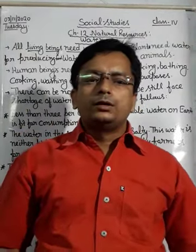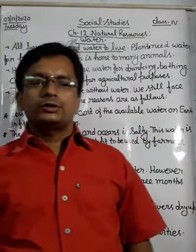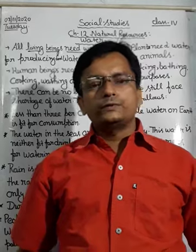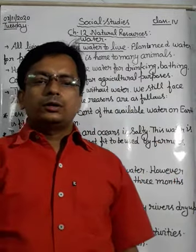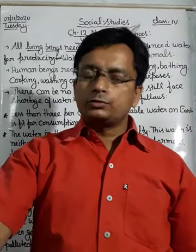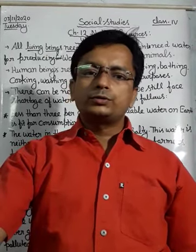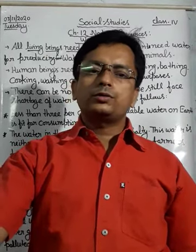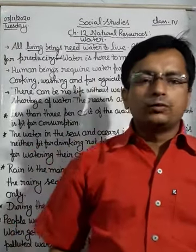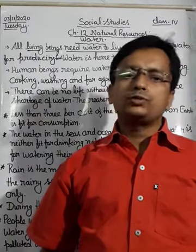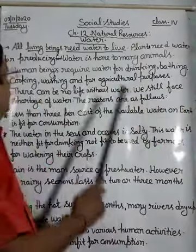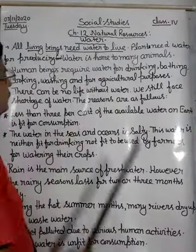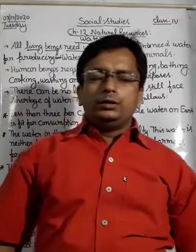The chapter name is Natural Resources, i.e., Water. Dear students, we are living on which planet? On the Earth. The planet on which we are living is Earth, and we have 8 planets in our solar system, but life is possible only on the Earth. Why? Because of availability of water and air on the Earth. In the absence of both these two things — air and water — life is not possible. So, all living beings need water to live.